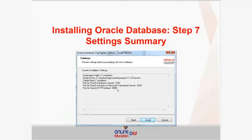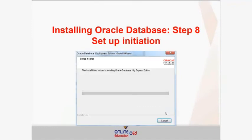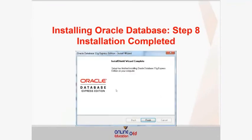Now you will see the installation summary. Review it first, and if everything looks correct, click Install. The setup will initiate and the installation will proceed — wait for it to finish. After that, a message will appear saying 'Finish installing Oracle Database 11G Express Edition on your computer.' Click Finish.